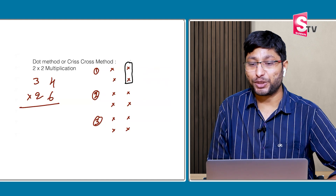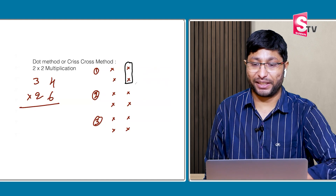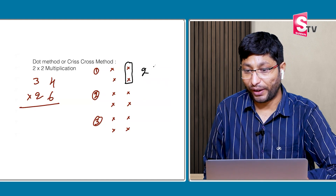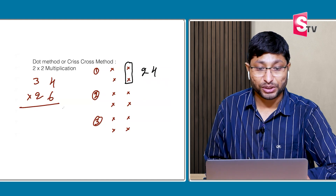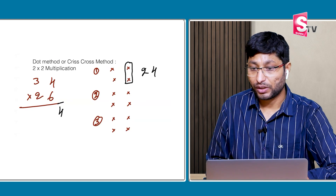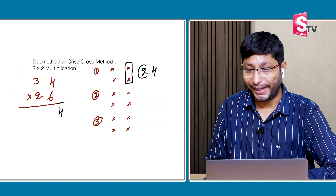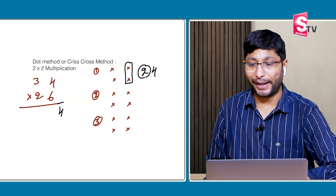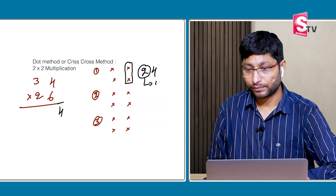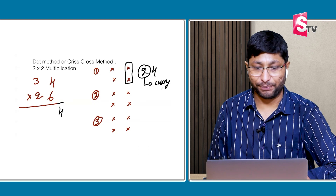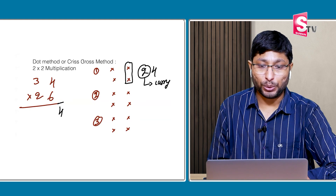Step 1: multiply units place into units place. 4 × 6 = 24. Write down the 4; 2 will be carry.